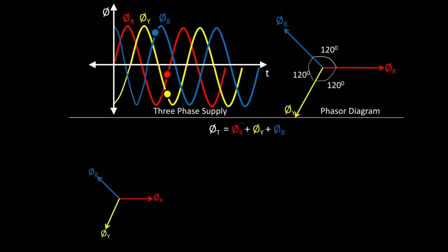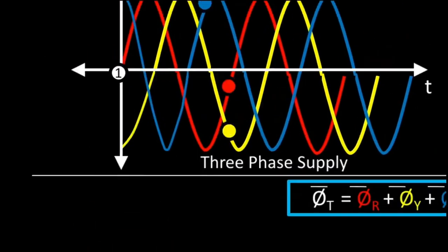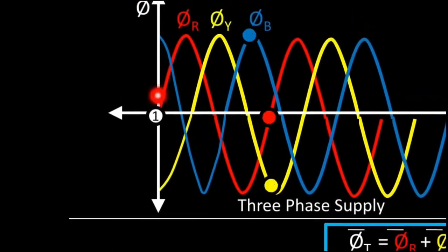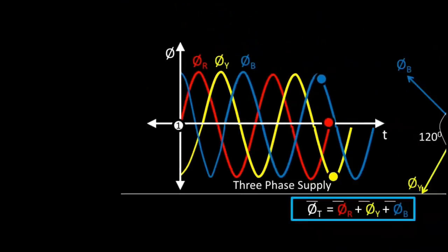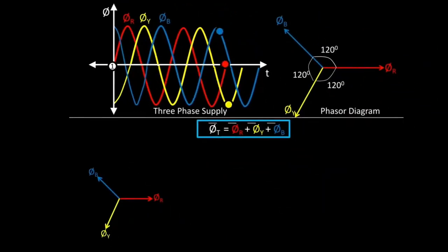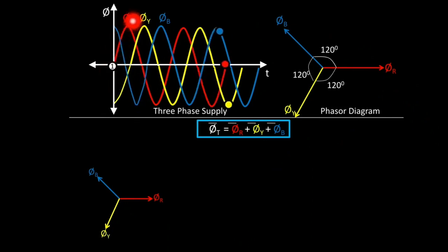Let's start. If we consider any instant — let it be the origin, marking origin as instant 1 — we are concentrating at this instant, that is at the origin. Let's find out the values of different fluxes at the origin. We can see that φR, the red flux, is 0 here because it starts at the origin.